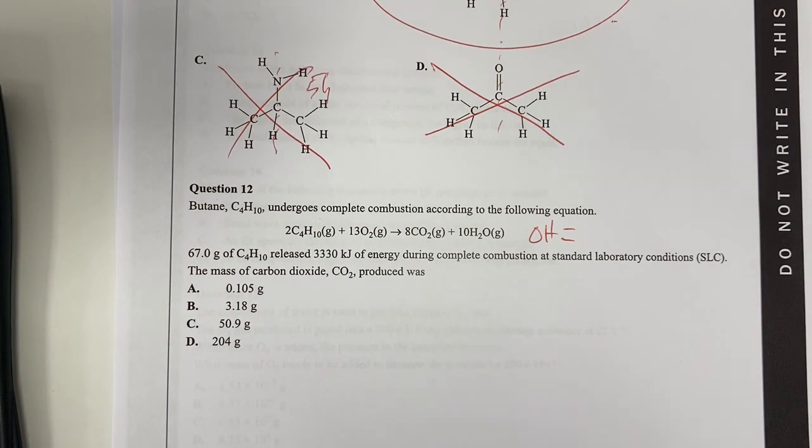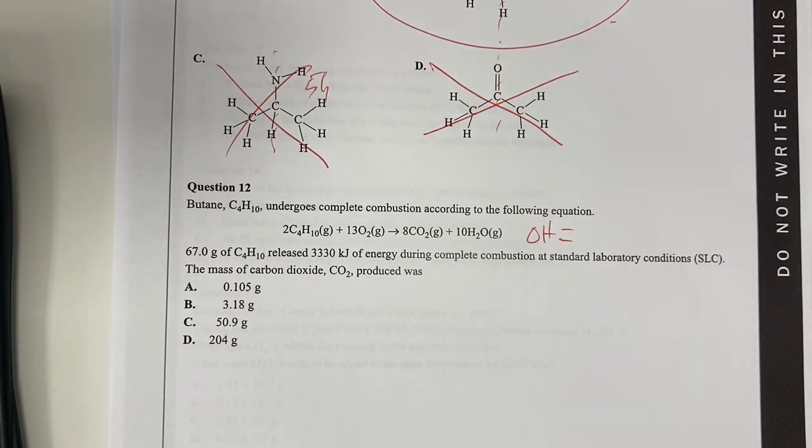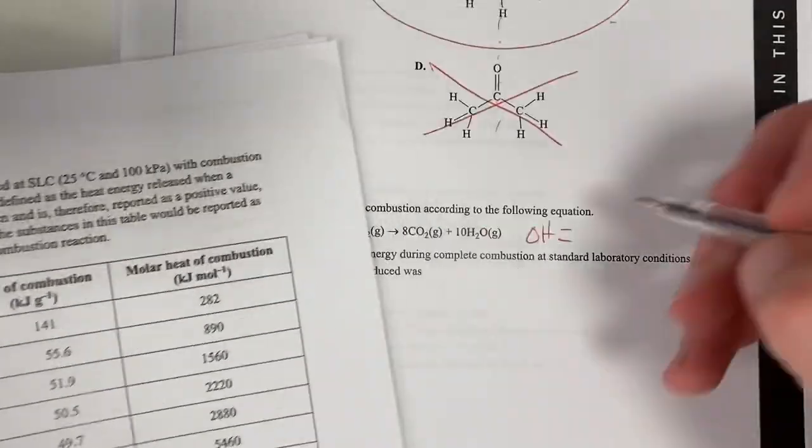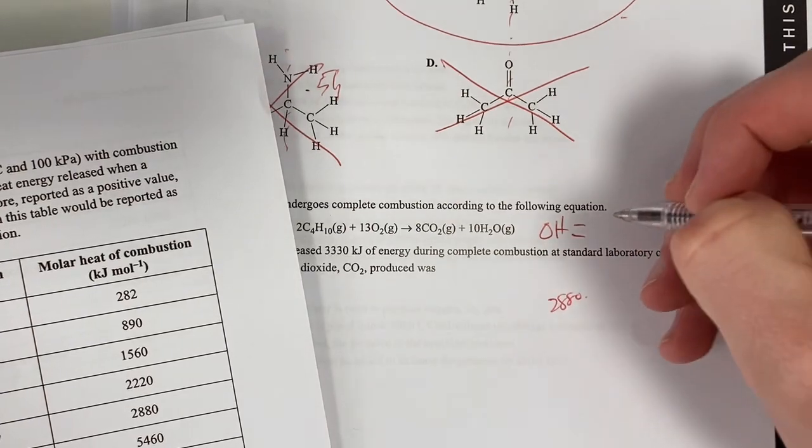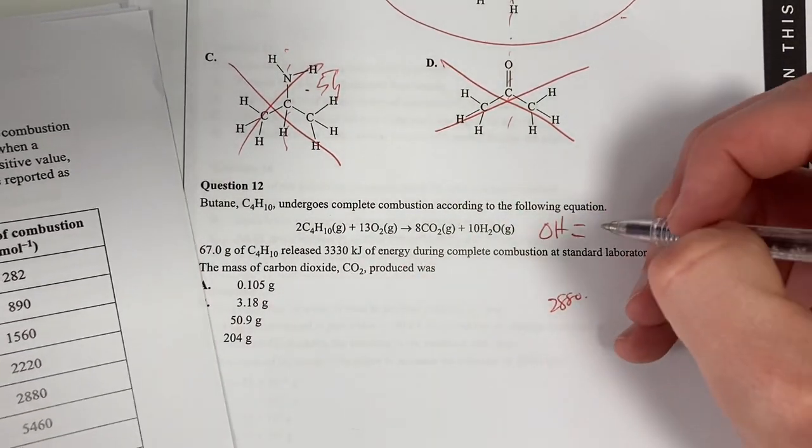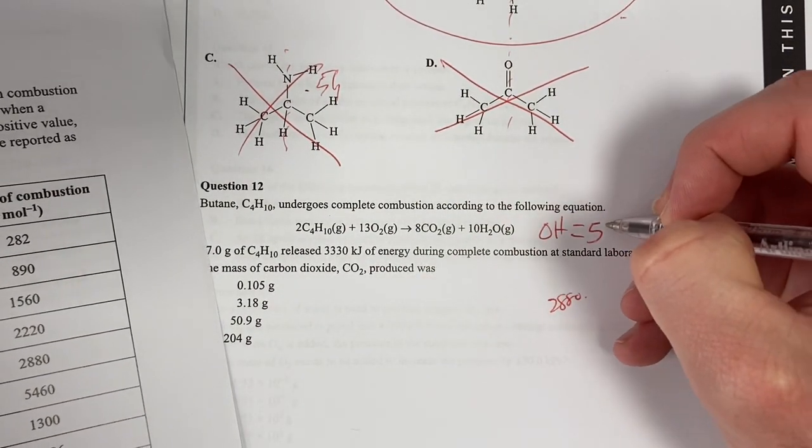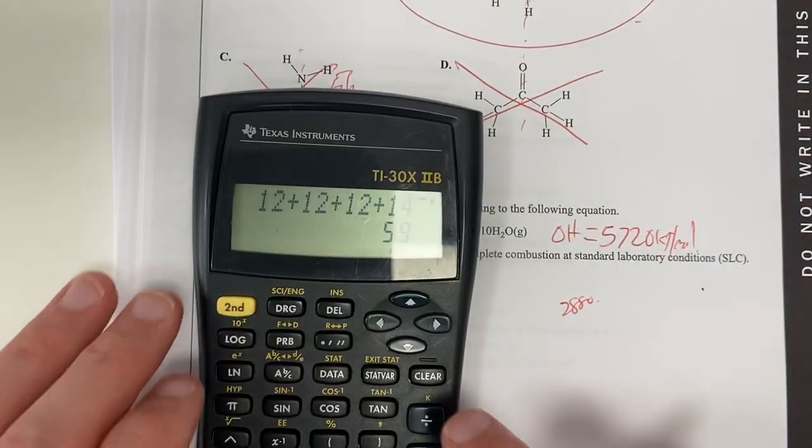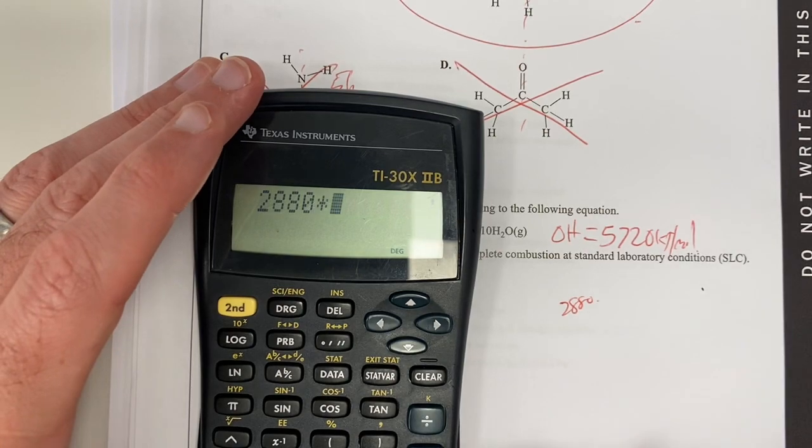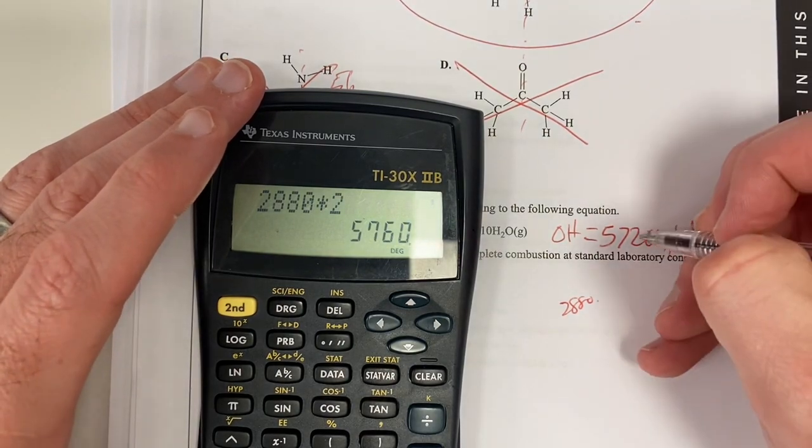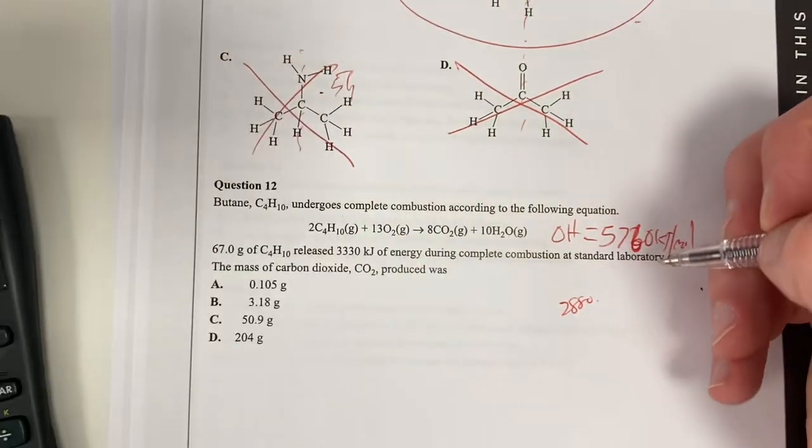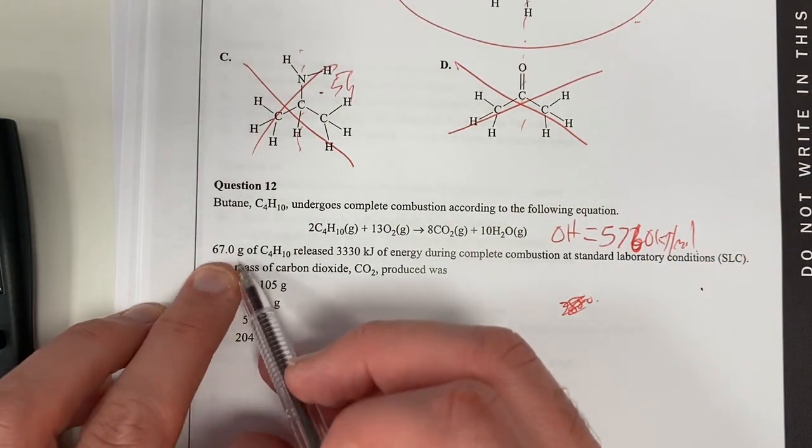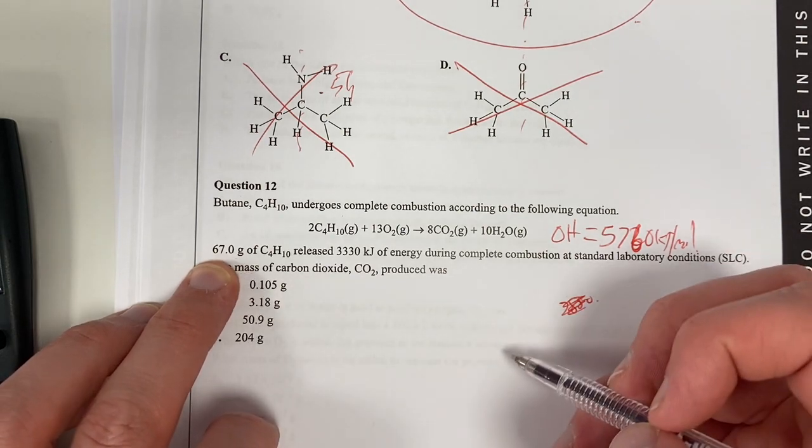So, complete combustion. Where is my delta H? Delta H for this reaction, butane is 2880, 2880 times that by 2 because we've got two butanes here. Gives me 5720 kilojoules per mole. I think that's right. Can I do my maths properly? 2880 times 2576. All right, anyway. Let's double check this. So, let's work out if all of this actually combusted. So, therefore...